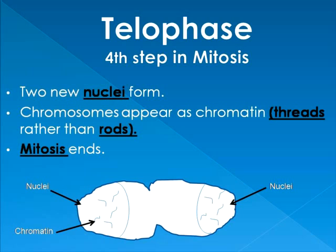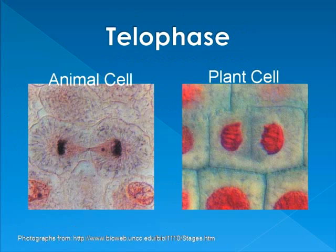Telophase is where the two new nuclei form. Chromosomes no longer appear as chromatin — they appear as thinner threads rather than rods. In the animal cell you can see two clear, distinct nuclei, and the same in the plant cell. That's telophase: the two new nuclei are formed, and that's really all you need to remember.